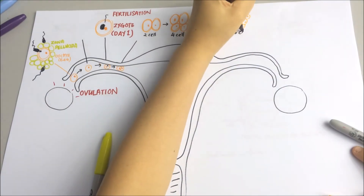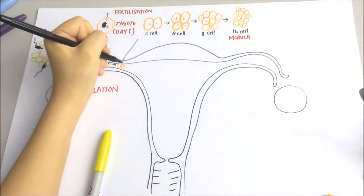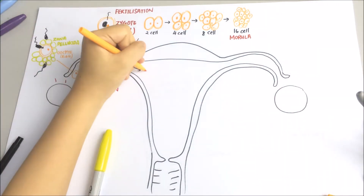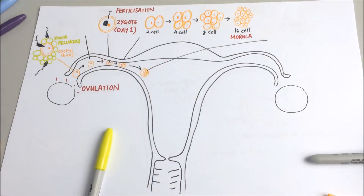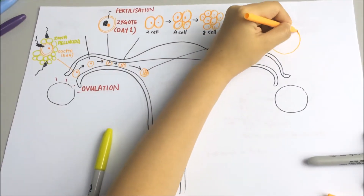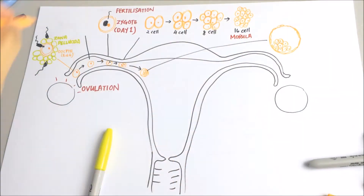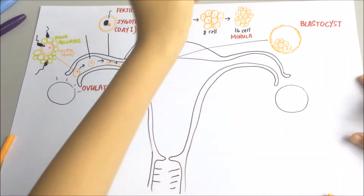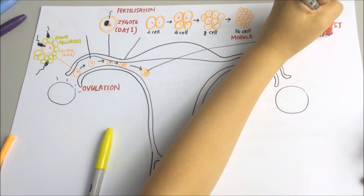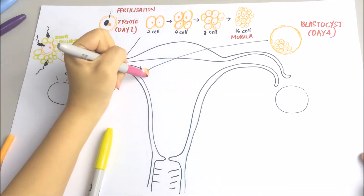By about day five, the developing embryo will reach the uterus. At this point, the morula has developed into a blastocyst. A blastocyst is a fluid-filled sphere — 'cyst' means a fluid-filled mass — consisting of an outer layer of cells known as the trophoblast, and a group of cells inside the sphere known as the inner cell mass.